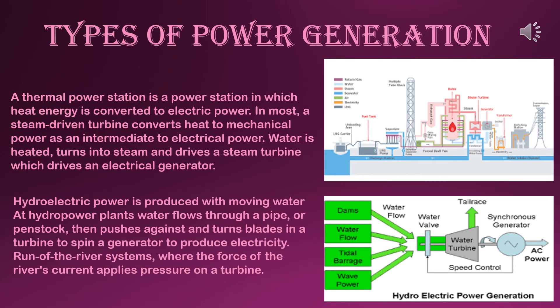The mechanical work done in these generators for rotating the armature coils is done in two ways: thermal power generation and hydroelectric power generation. In thermal power generation, electrical energy is produced by burning fossil fuels such as coal, coke, or oil like petrol, diesel, and kerosene. In West Bengal, there is a thermal power plant at Bandel. A steam driven turbine converts heat to mechanical power as an intermediate to electrical power — water is heated, turns into steam, and drives a steam turbine which drives an electrical generator.